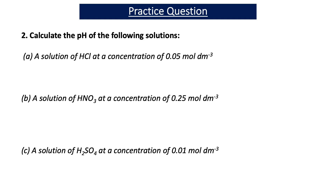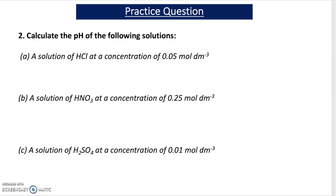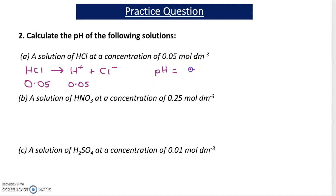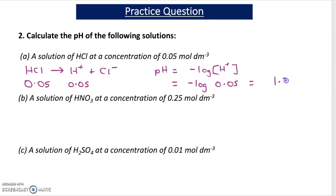Question 2, part A: calculate the pH of a solution of hydrochloric acid at a concentration of 0.05 mol dm⁻³. Hydrochloric acid splits up into H⁺ ions and Cl⁻ ions in a 1:1 ratio, so the concentration of H⁺ is also 0.05 mol dm⁻³. pH = −log(0.05) = 1.30.